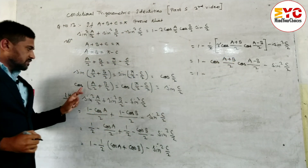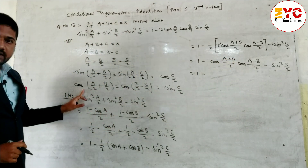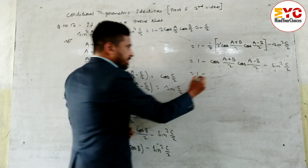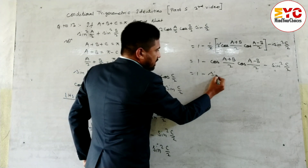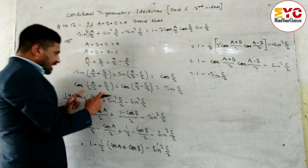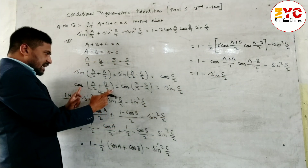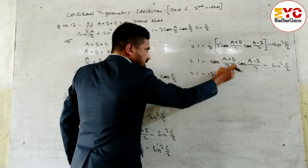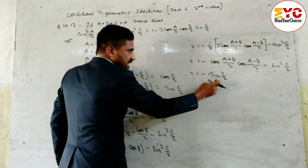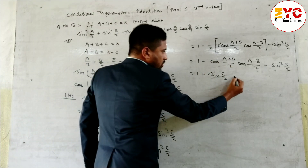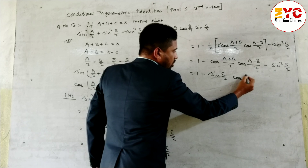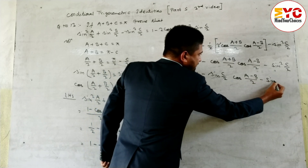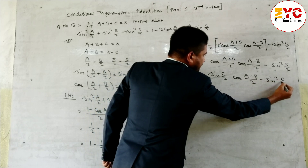We already found that cos((a plus b) by 2) equals sin(c by 2). So we replace cos((a plus b) by 2) with sin(c by 2), giving: 1 minus sin(c by 2) cos((a minus b) by 2) minus sin square(c by 2).